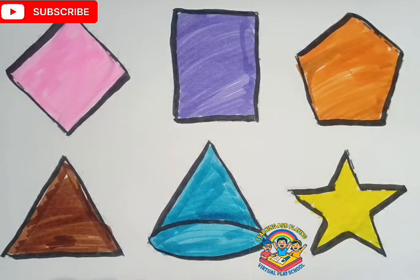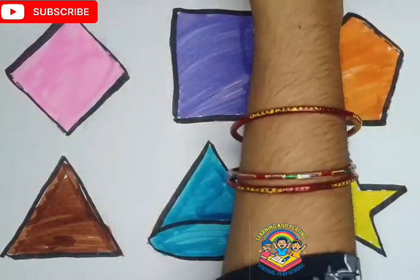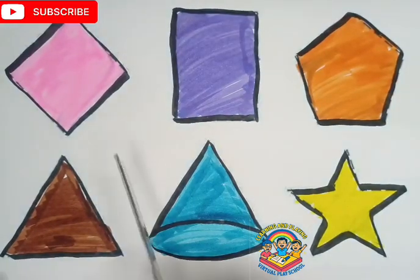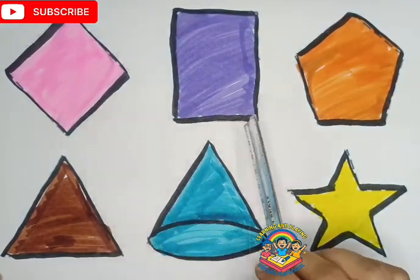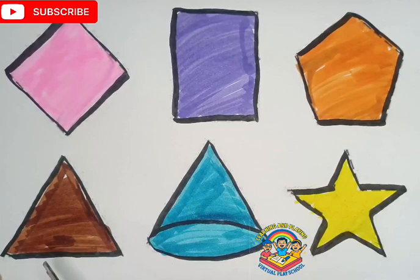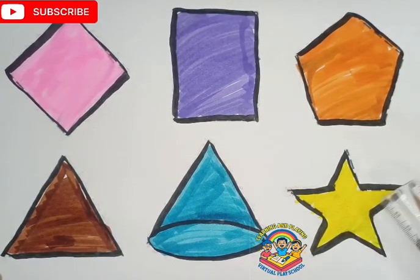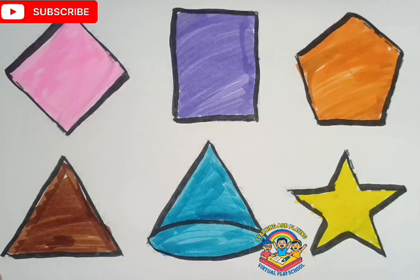Okay kids, let's revise: diamond, rectangle, pentagon, triangle, cone, star. Okay kids, please like, share, and subscribe. See you in the next video.